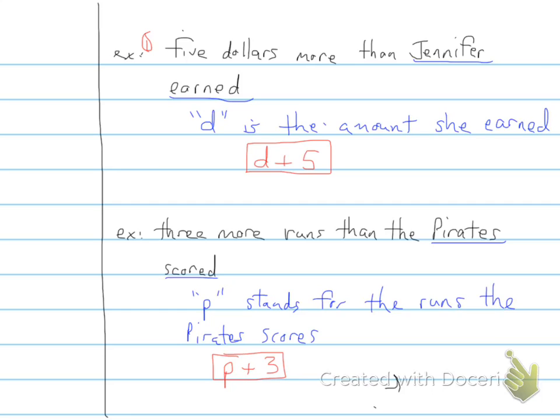So we'd have the Pirates score plus three more runs. So that's basically how you would write an expression based on a certain situation.